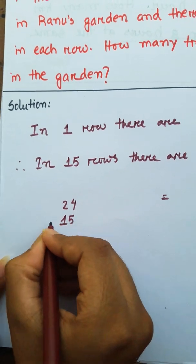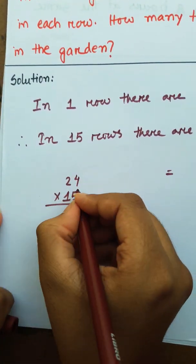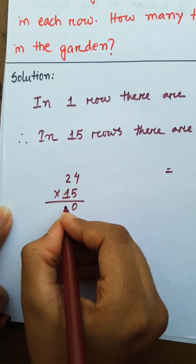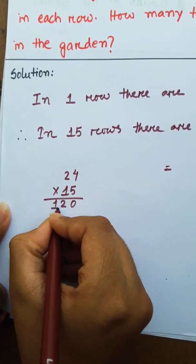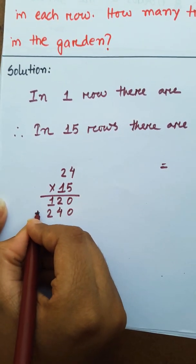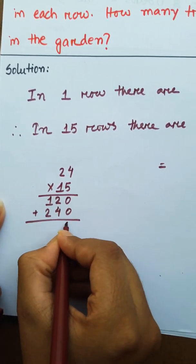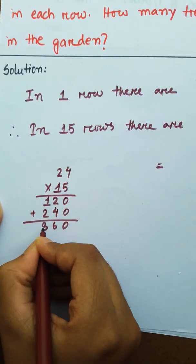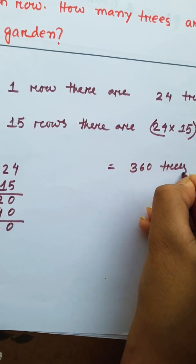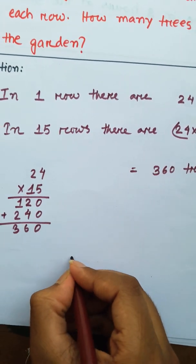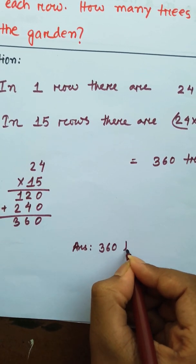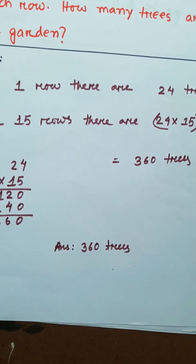Calculating 24 x 15: 5 fours are 20, carry 2; 5 twos are 10, plus 2 is 12; then 1 four is 4; 1 two is 2. Adding the partial products gives 360 trees. So the answer is 360 trees.